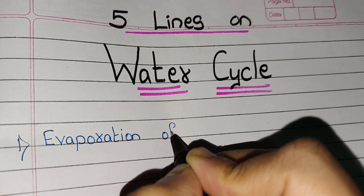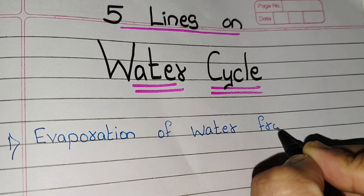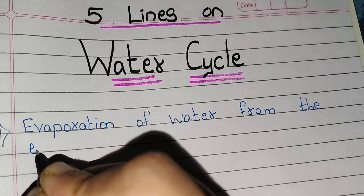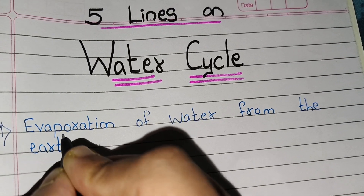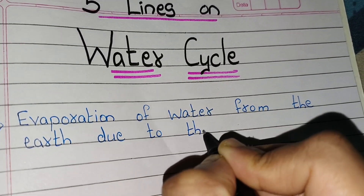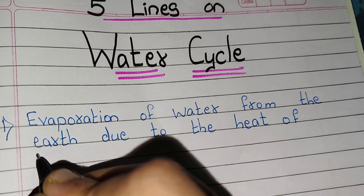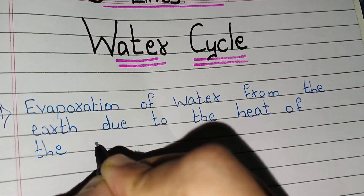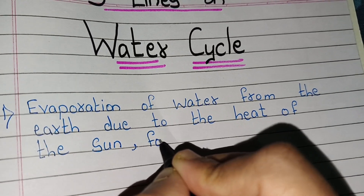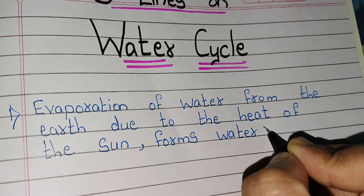Evaporation of water from the earth due to the heat of the sun forms water vapour.